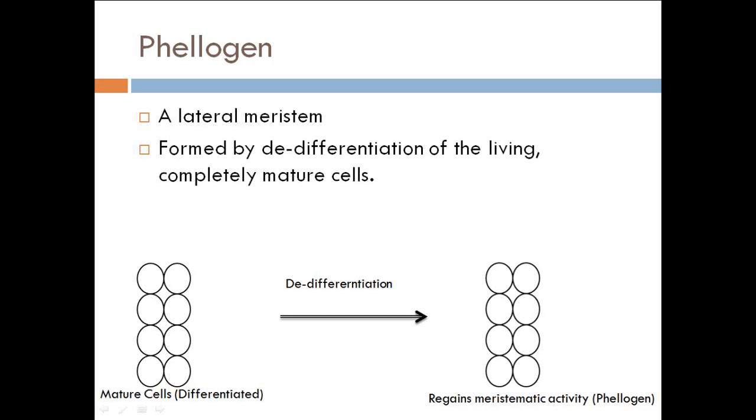Let's break the term into differentiation first. If a group of cells is assigned a particular function, I would call it mature cell and differentiated cells because they do not have meristematic activity. If I talk about dedifferentiation, that would simply mean regaining the meristematic activity. Here on the left you see differentiated cell dedifferentiating into a group of cells that regain their meristematic activity and function as phellogen or cork cambium.